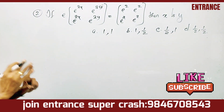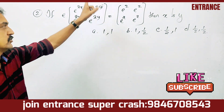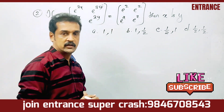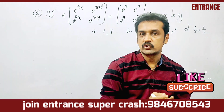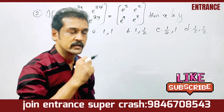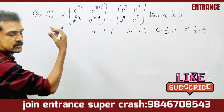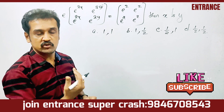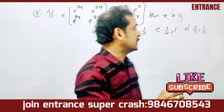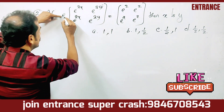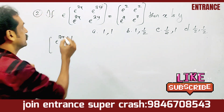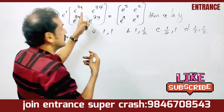If matrix A is equal to matrix B, then the values of x and y — since corresponding elements are equal — we have e raised to some power equal to e squared, and similarly for the other elements.